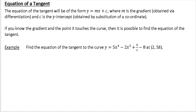In this video we're going to look at how we can use differentiation to find the equation of a tangent to a curve. We're going to jump to the example here. It says find the equation of a tangent to the curve 5x to the power 4 minus 2x cubed plus 4 over x minus 8 at the point (2, 58).